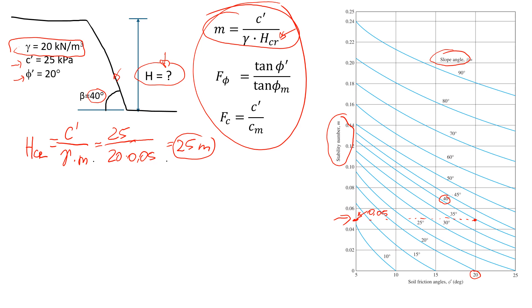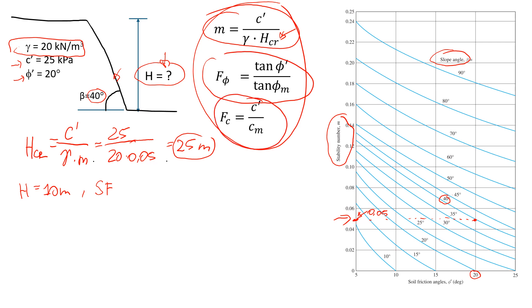So that's pretty straightforward — we use the formula. Now we will solve a different example. Let's say we're going to have a cut with h equal to 10 meters, and we would like to estimate the safety factor. So what will be the safety factor of the slope when we have h equal to 10 meters? To do that, we are going to use these formulas. The procedure is straightforward, but it takes a little bit of calculation.